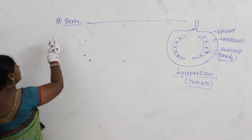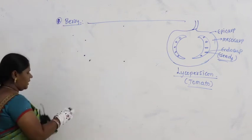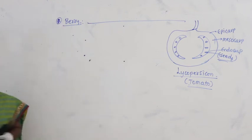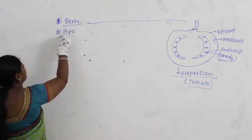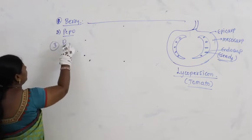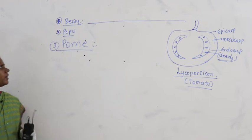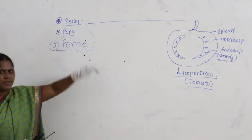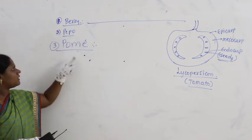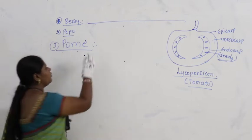Now let us go to the third category — pome. Berry is first, pepo is second, and now let us discuss pome. Let us see the characteristics of pome.